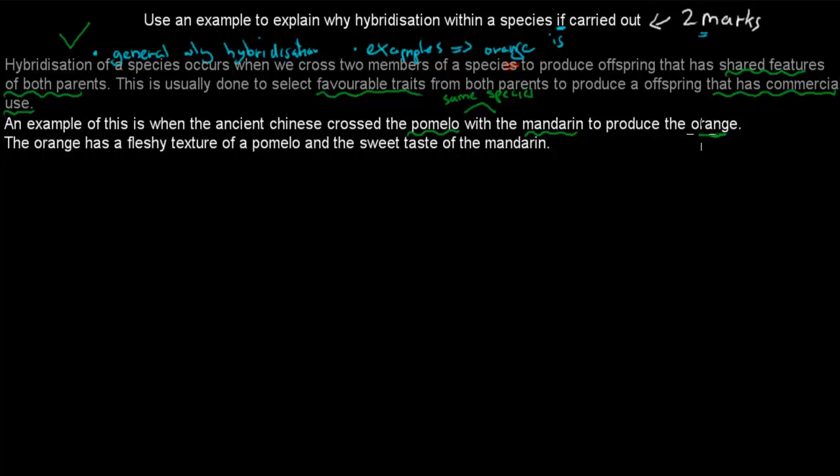And then we cross them and then we produce the orange. And why do we do that? Well, the orange has the fleshy texture of the pomelo and the sweet taste of the mandarin. So it has some features of the pomelo and some features of the mandarin.